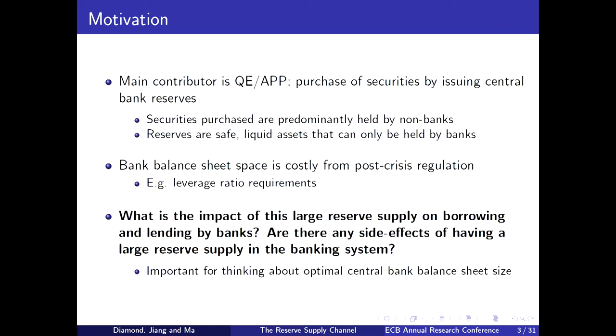One key contributor to this rise in reserves is quantitative easing, or the APP program for the ECB. This involves the purchase of securities such as government bonds, financed by reserves — safe and liquid assets that can only be held by the banking sector. Importantly, the banking sector after the crisis has also been constrained by increasing regulation. For example, leverage ratios and supplementary leverage ratios impose a cost on how large banks' balance sheets can get.